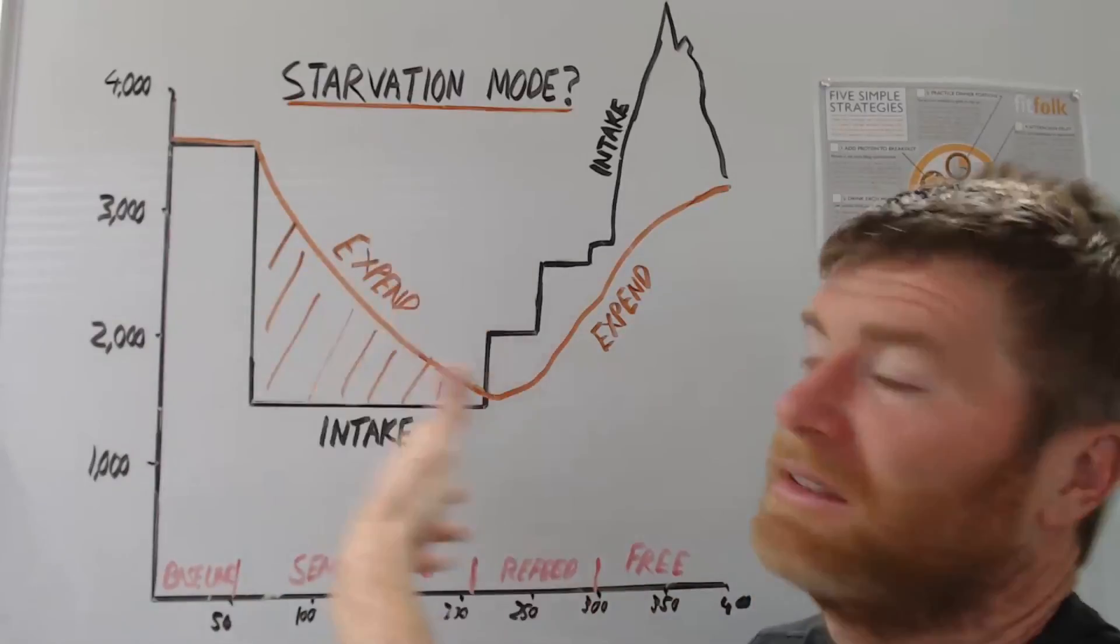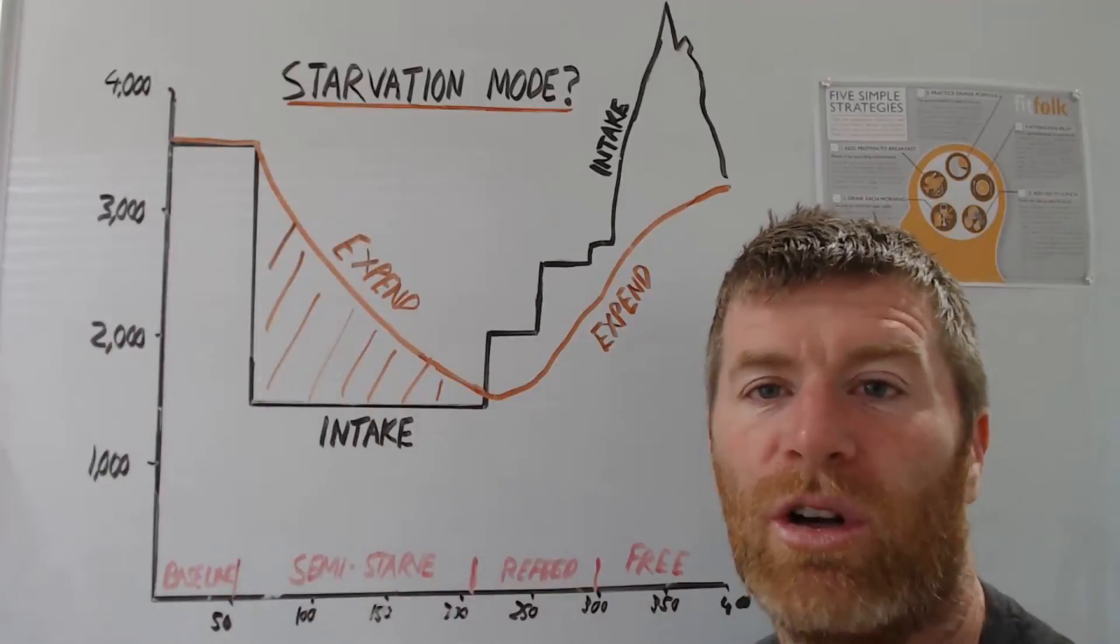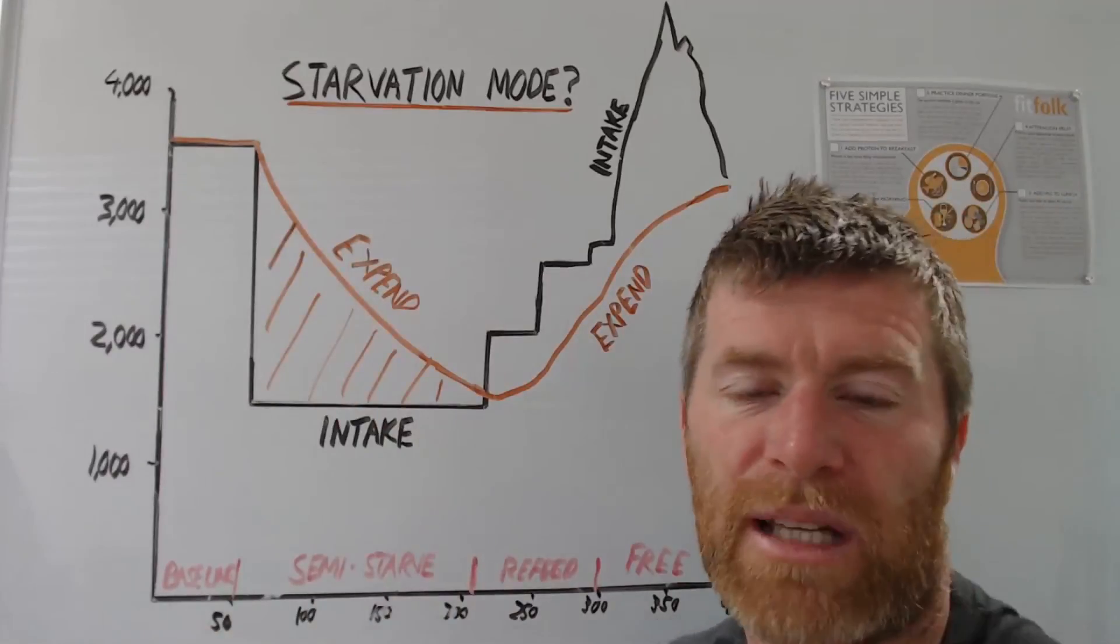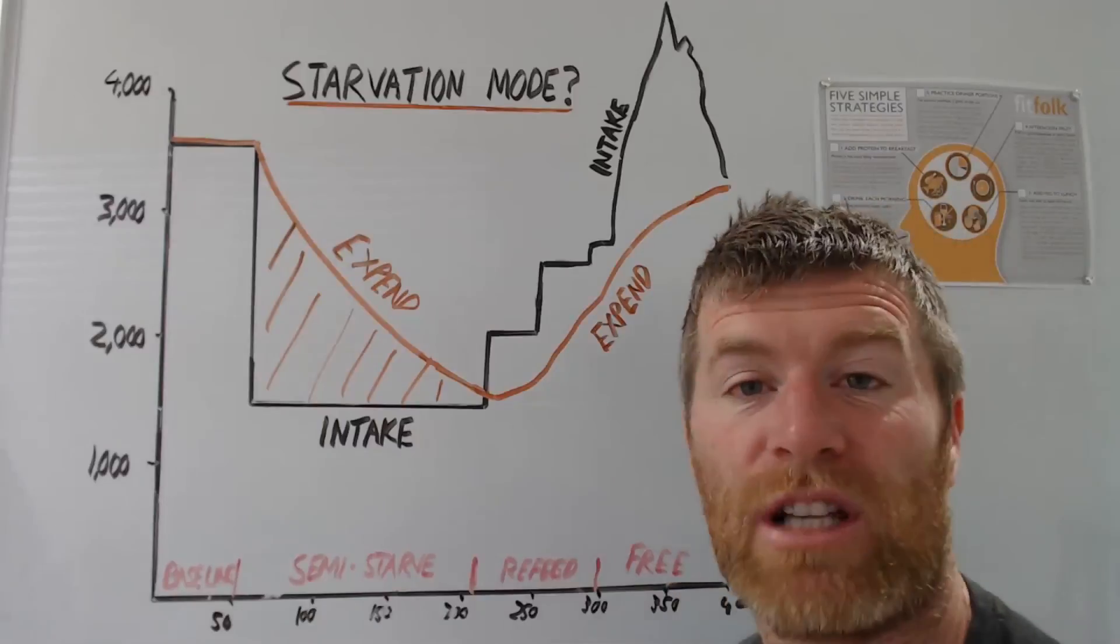So what happens is you get a little bit of slowing and a little bit of under-reporting. We get a bit hungry. And that's generally what's going on when people think of starvation mode. It is just people becoming inaccurate and your body slowing down a bit.